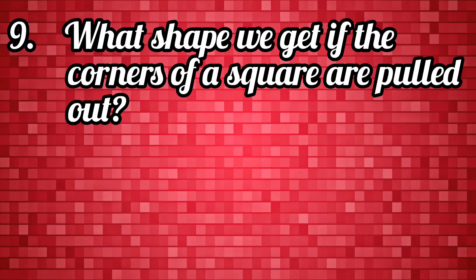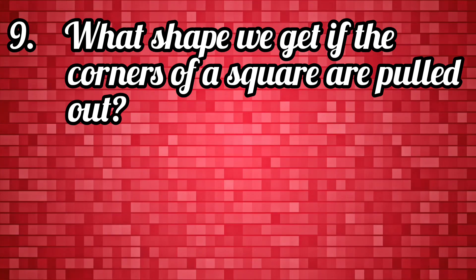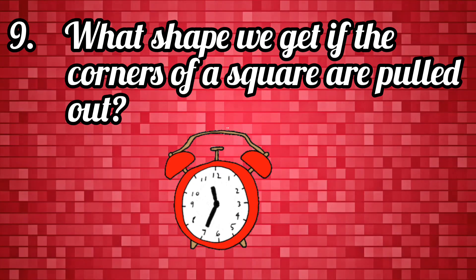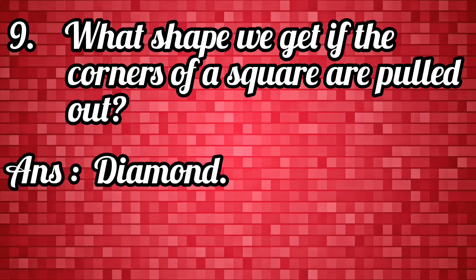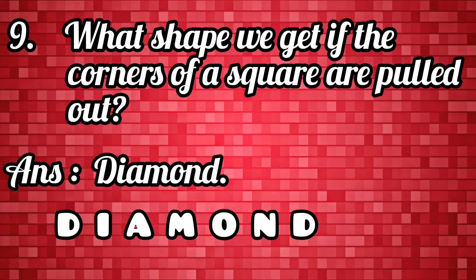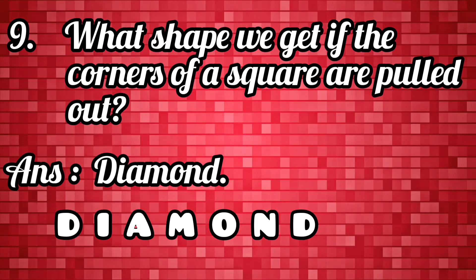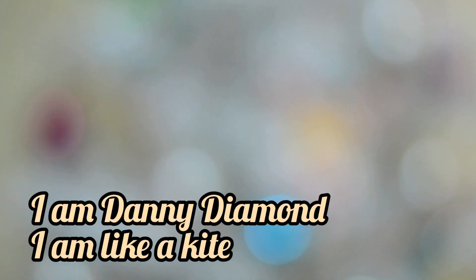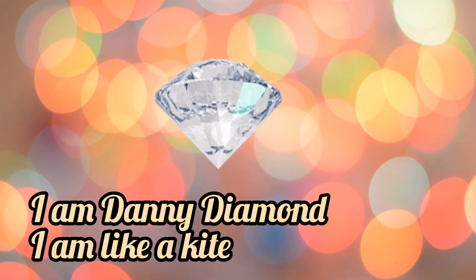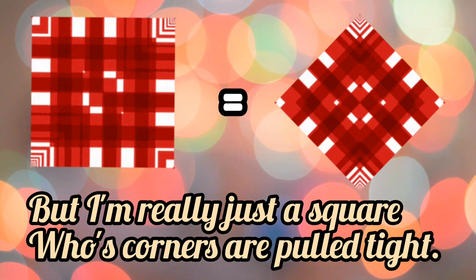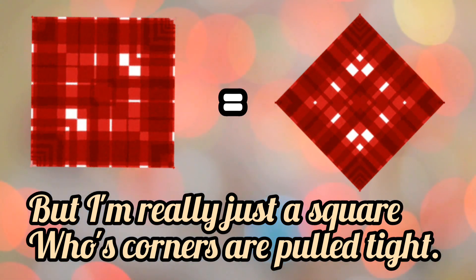Which shape do we get if the corners of a square are pulled out? We get a diamond. D-I-A-M-O-N-D, diamond. I am Danny Diamond. I am like a kite, but I am really just a square whose corners are pulled tight.